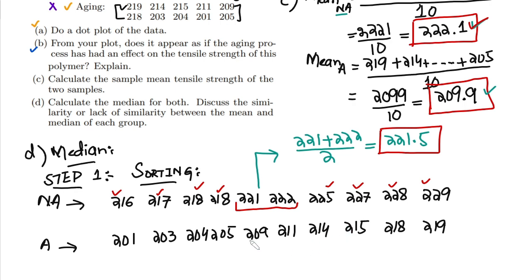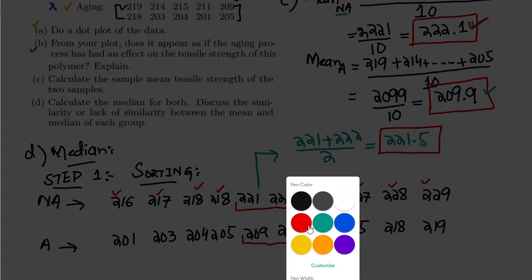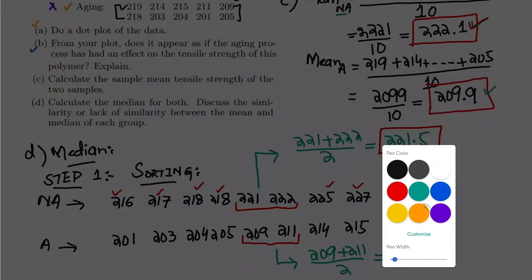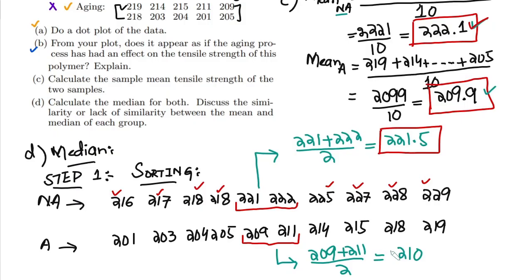Similarly, for the aging data set, the two middle points for the 10 data points are identified. Adding them together and dividing by 2, I get 210, which is the median for the aging data set.